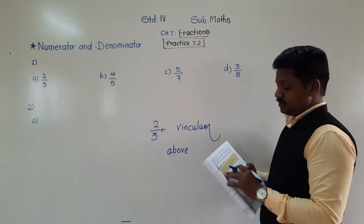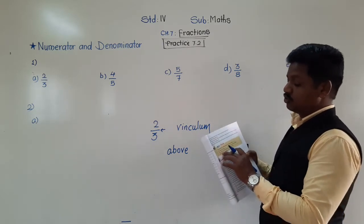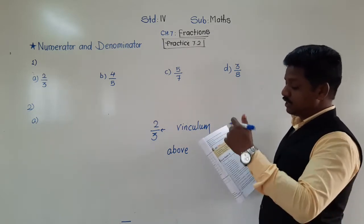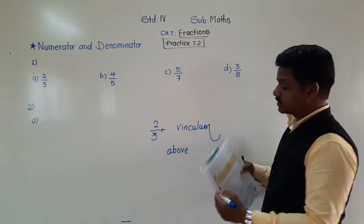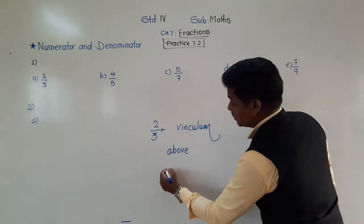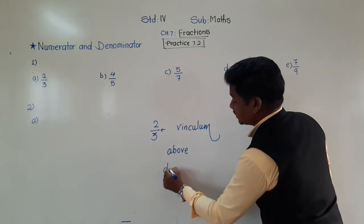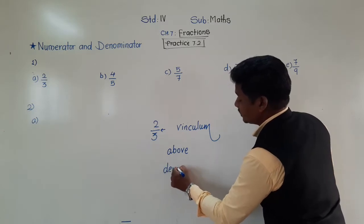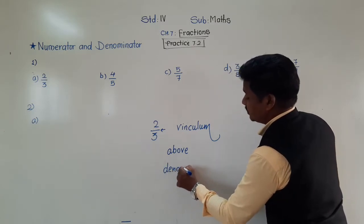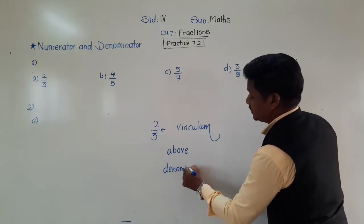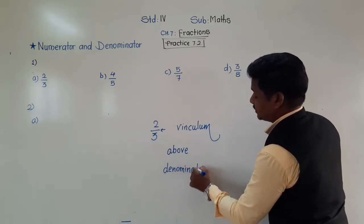Third question: the numeral written below the vinculum is called denominator.